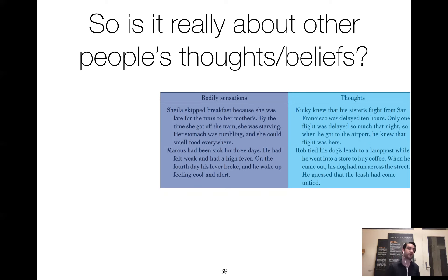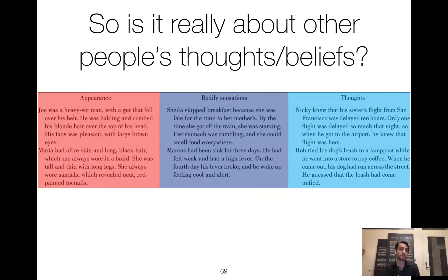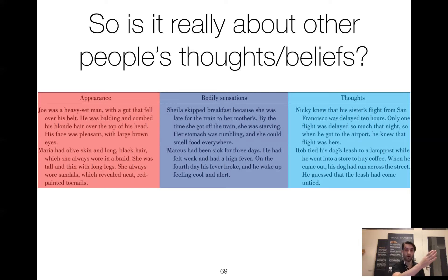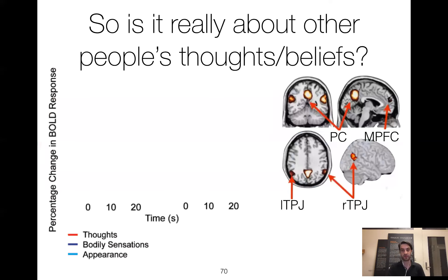The last condition is about people's appearance: 'Joe was a heavyset man with a gut that fell over his belt. He was balding and combed his blonde hair over the top of his head. His face was pleasant with large brown eyes.' Or: 'Maria had olive skin and long black hair, which she always wore in a braid. She was tall and thin with long legs. She always wore sandals with neat red-painted toes.' All have people, but only some deal with people's minds. The others deal with bodily sensations or appearances.